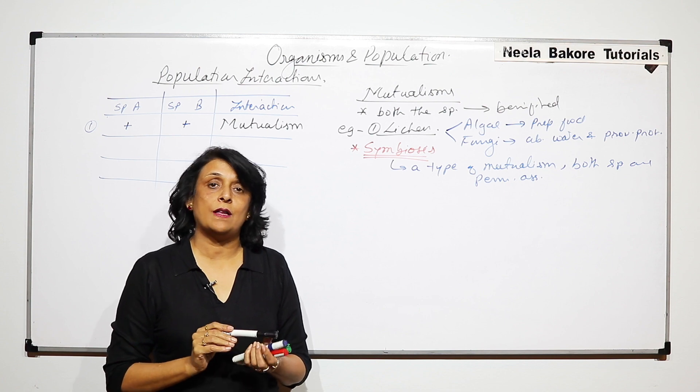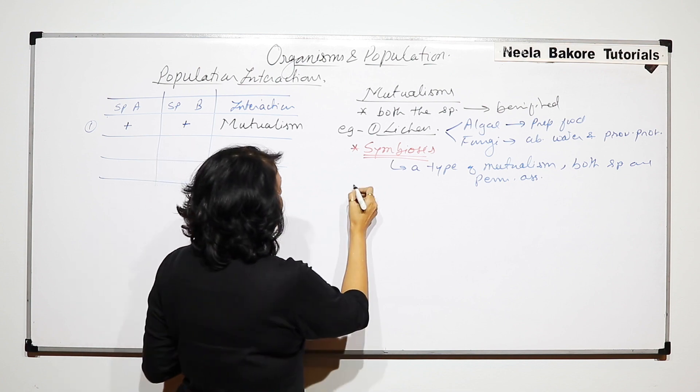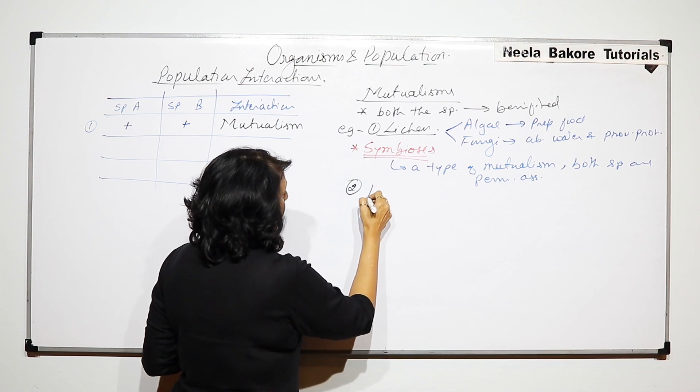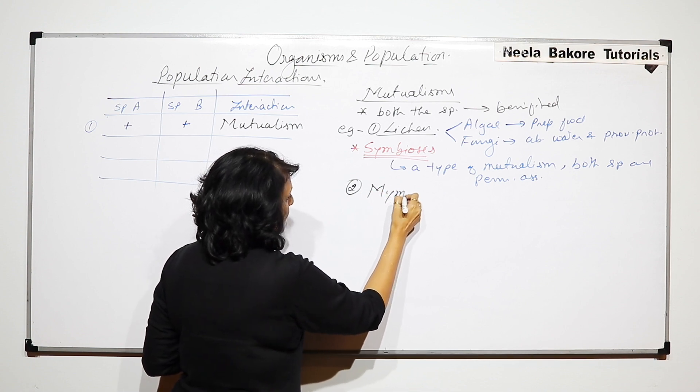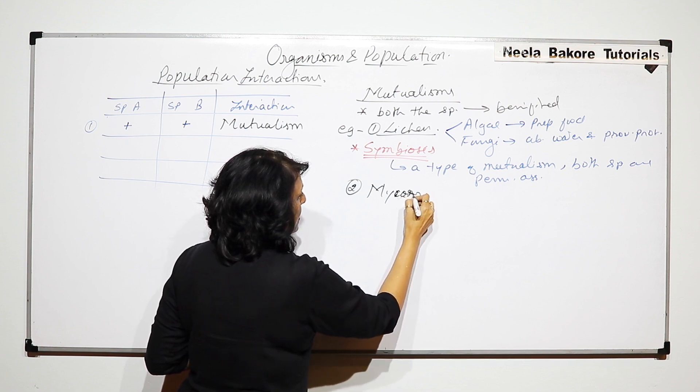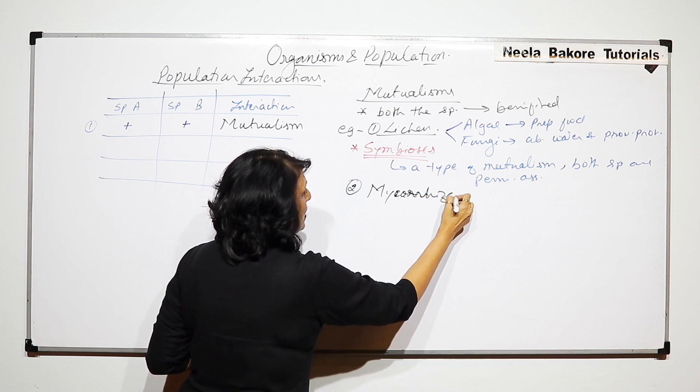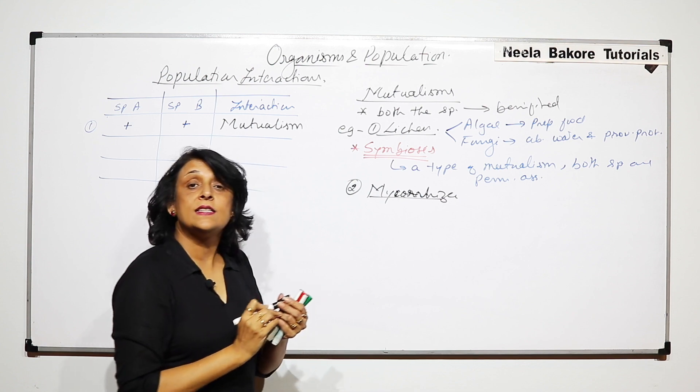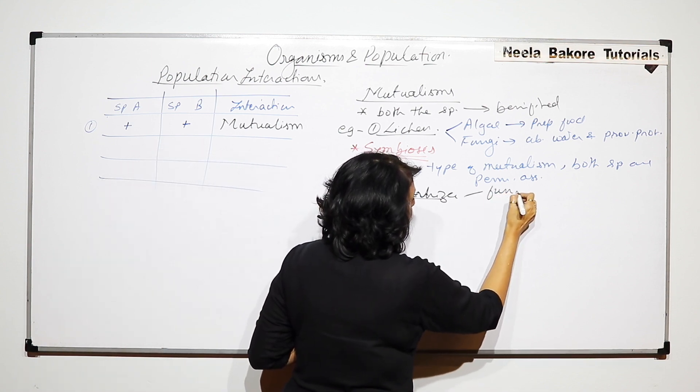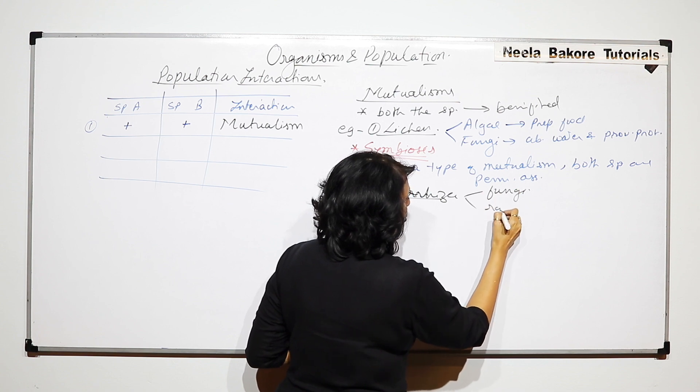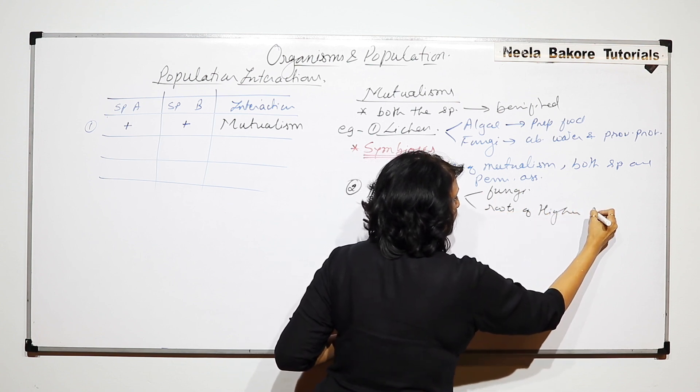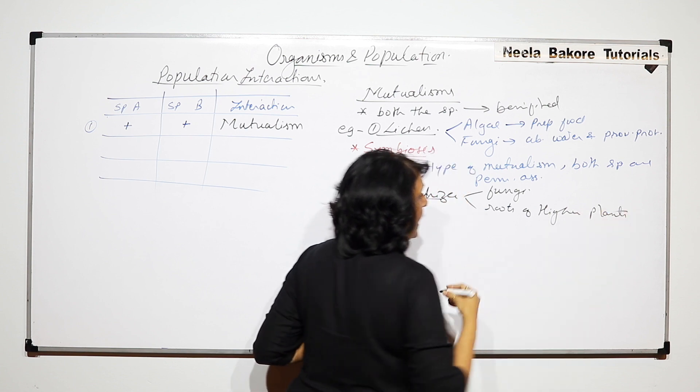The second example again of mutualism is mycorrhiza. Mycorrhiza is again a symbiotic relationship between fungi and the roots of higher plants.